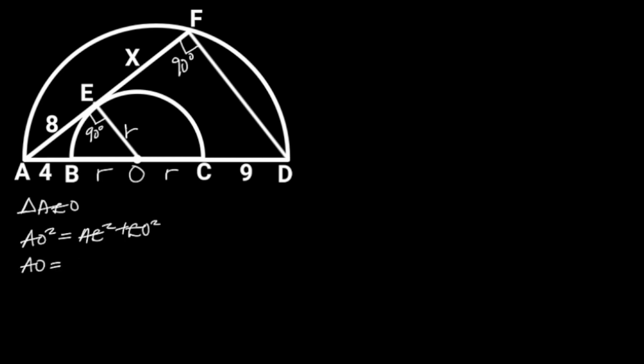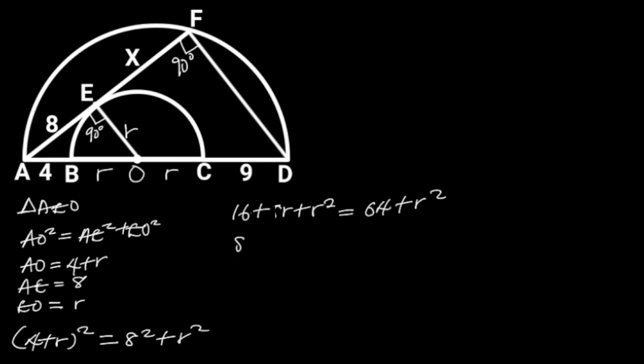AO is equal to 4 plus R, AE is equal to 8, and EO is equal to R. Substituting these values in the formula will give us (4+R)² = 8² + R². Simplifying this equation will give us 16 + 8R + R² = 64 + R². Collecting like terms will give us 8R + R² - R² = 64 - 16. R² - R² is equal to 0, and 64 - 16 is equal to 48.